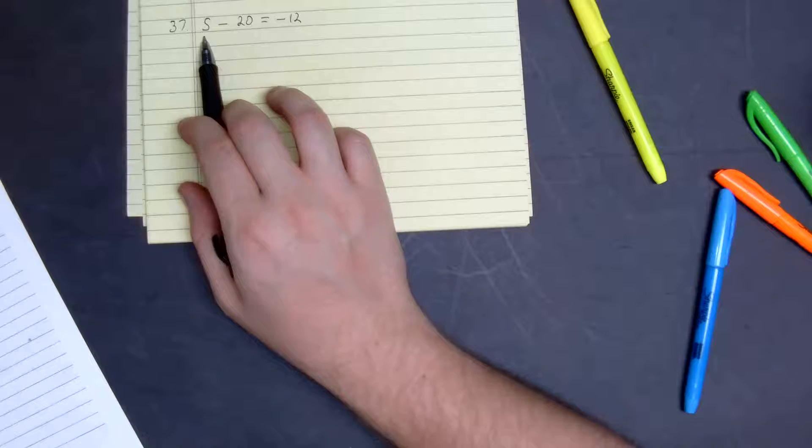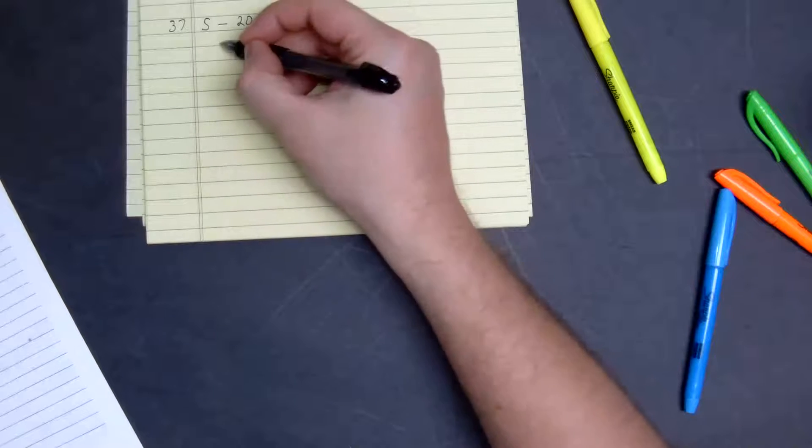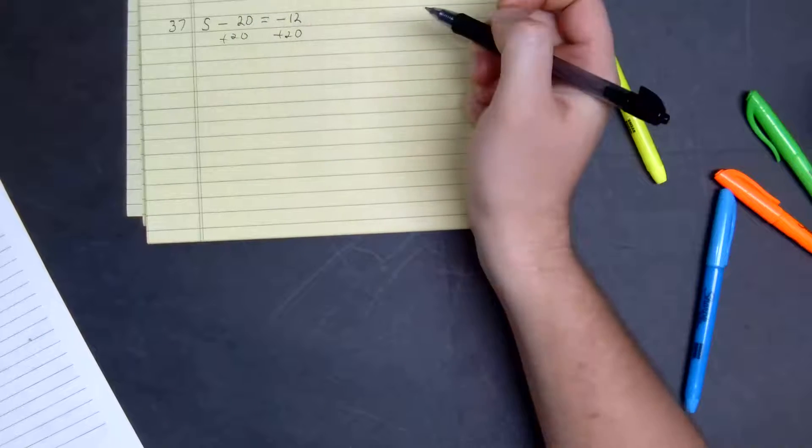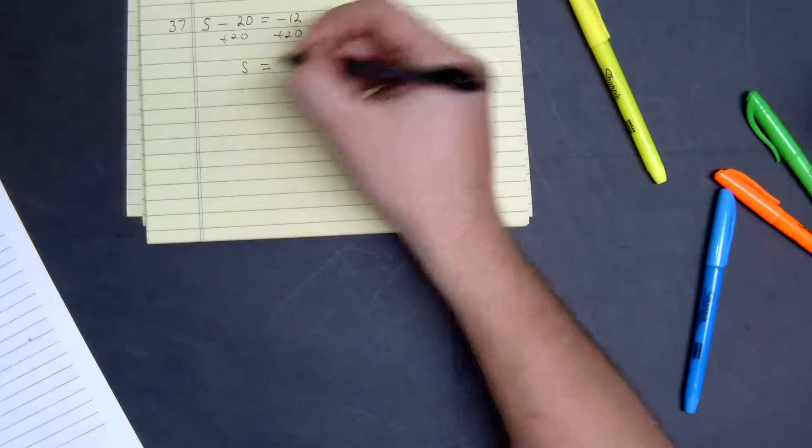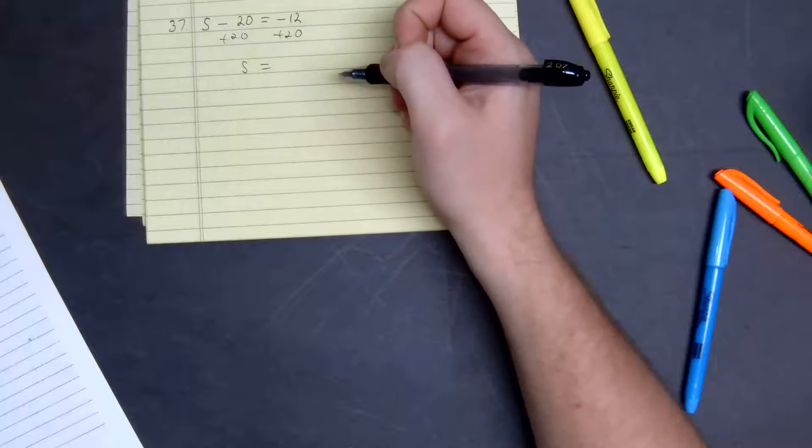So what we're going to do is we're going to isolate S by adding 20 to both sides. So we get S is equal to 20 minus 12.